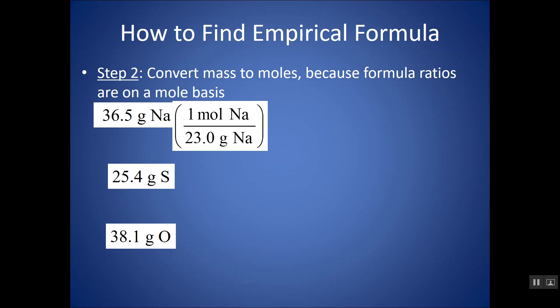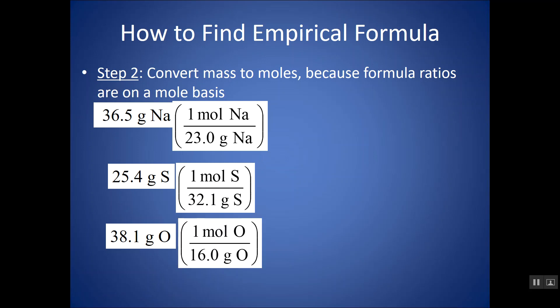So sodium has a molar mass of about 23 grams per mole. I want grams on the bottom so that it cancels out with the grams of sodium, and I want moles on top, so that's what I'm left with. Sulfur has a molar mass of 32.1. Oxygen has a molar mass of 16. Notice that the masses are always on the bottom. Notice that even though oxygen is a diatomic element when it's by itself, right now it's in a compound. So I don't know how many oxygens I have right now. I'm using 16 grams of oxygen because right now we're just dealing with oxygen by itself, not as a diatomic element.